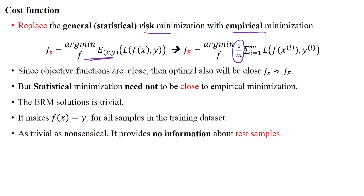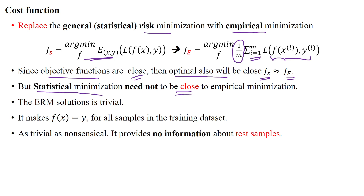Empirical risk minimization uses a finite number of samples: we calculate the loss for each and every sample, sum the total loss, and take the average. The objective functions for true risk and empirical risk are close, so the optimal values may also be close between the empirical risk and statistical risk. However, statistical risk minimization need not always be close to empirical risk minimization, because the m number of samples may be fewer than the true data distribution.